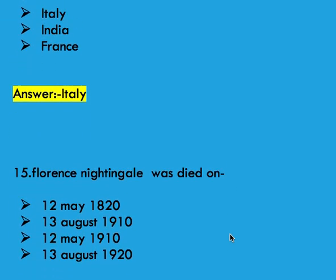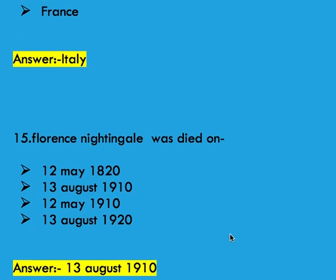Next question: Florence Nightingale died on options: 12 May 1920, 13 August 1910, 12 May 1910, and 13 August 1920. Right answer is 13 August 1910.